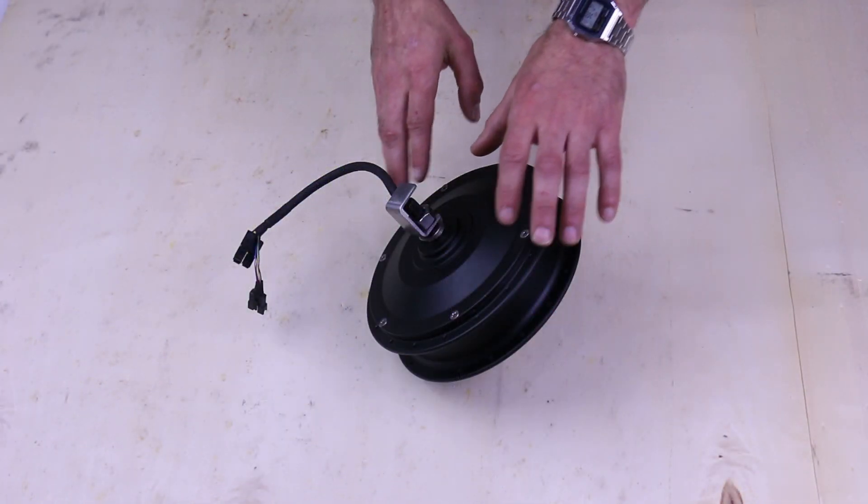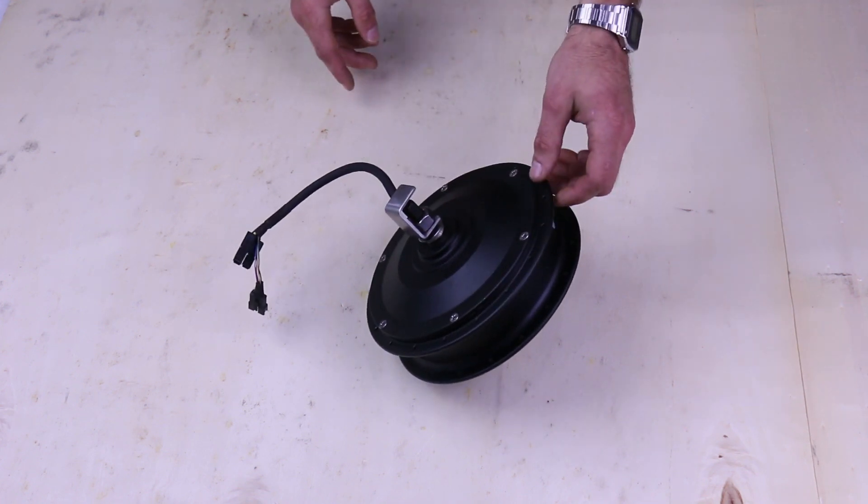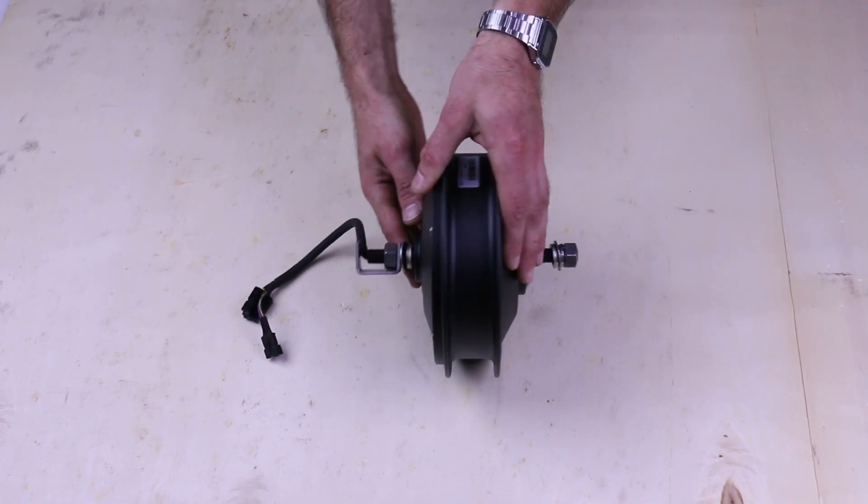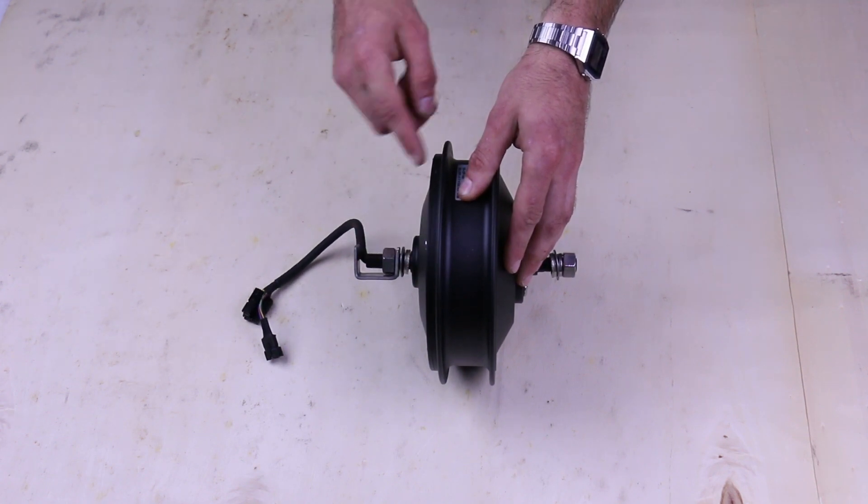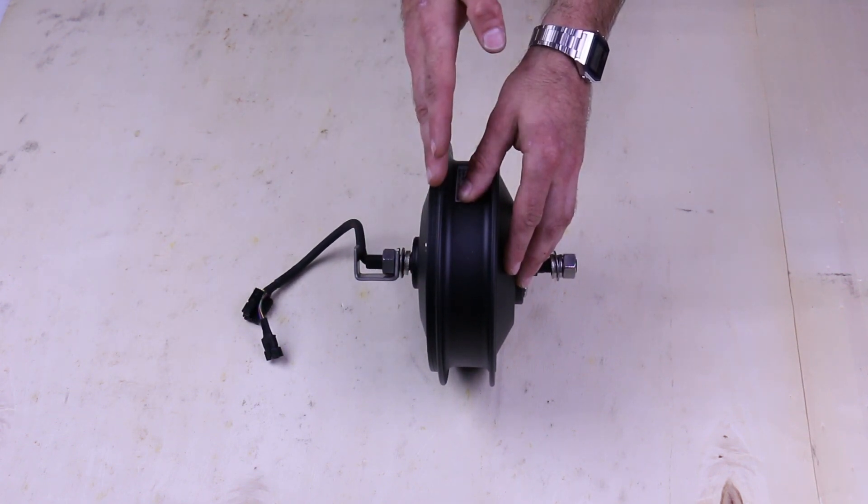We're going to use a front eZee motor to demonstrate how to disassemble the motor, partially because it has a split side plate here. So that means that the side plate is separate from the spoke flanges.